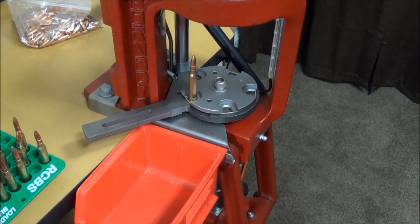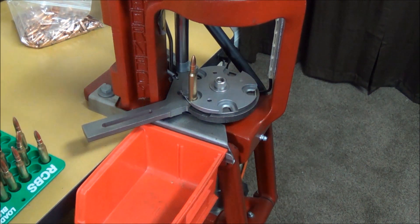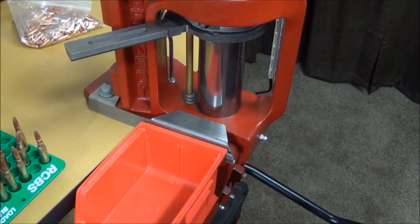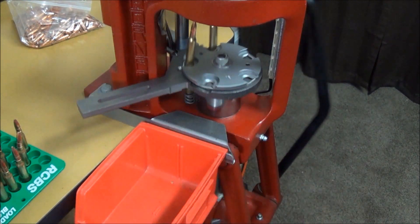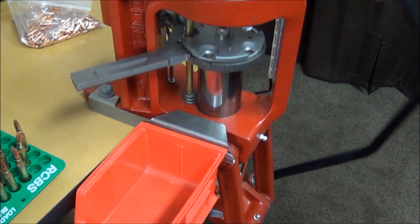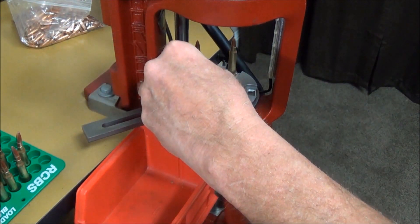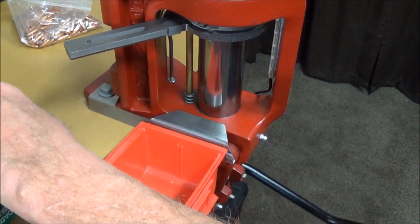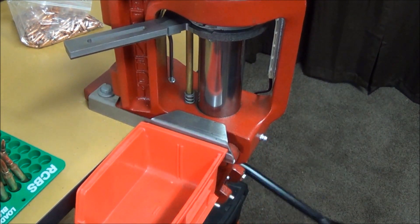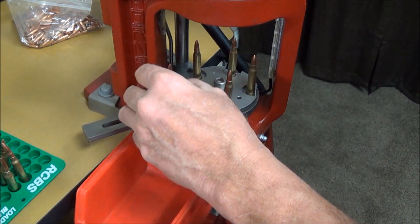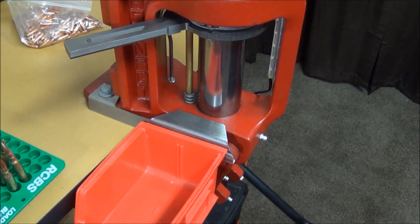For the final step, which is basically seating and crimping the bullet, I'm going to go ahead and use my progressive press simply because it goes a little bit faster. I've already got my die set up. It's set to both seat the bullet and to crimp it. We'll just set that on up in there. Press the lever down. Go to our second bullet. Come down, and on and on and on. This is one of the advantages of the progressive press, as I'm able to rock out quite a few loads here pretty quickly.